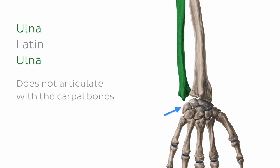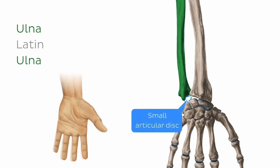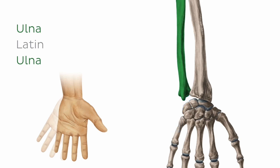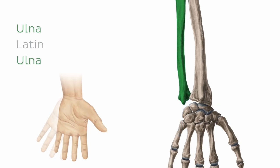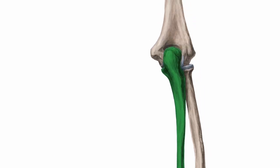Instead, it is separated from the carpal bones by a small articular disc, which allows for a greater degree of rotation of the forearm, as well as ulnar deviation of the hand. So let's take a closer look now at the prominences, the borders, and the projections which define the surface of this bone.